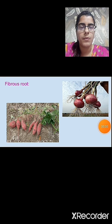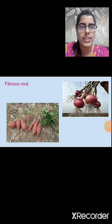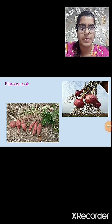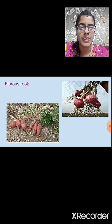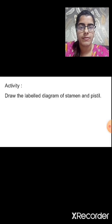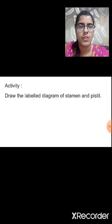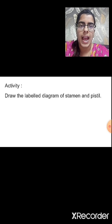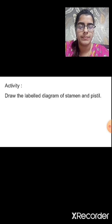We have revised all the topics of this chapter. I hope all the topics are clear. The activity for today is to draw a labelled diagram of stamen and pistil.